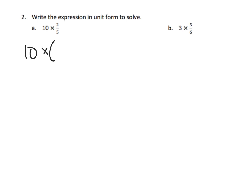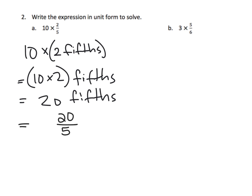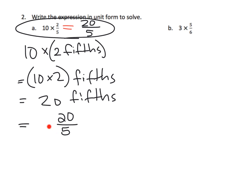We can think of this as ten times two-fifths. Ten times two-fifths is the same as saying ten times two-fifths, which gives us twenty-fifths — that's twenty over five. Now, are we expecting students to write all those steps? No. The goal is for students to instantly see that ten times two-fifths is twenty-fifths, and that it makes sense — it's not just a rule.